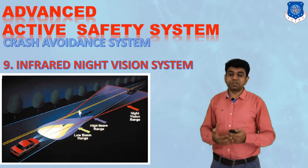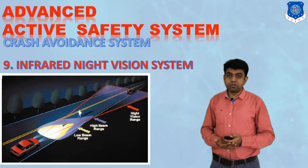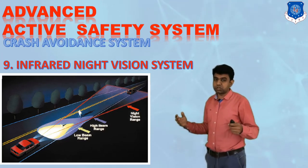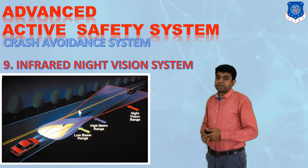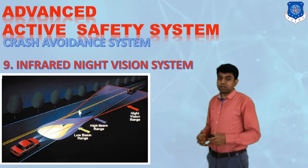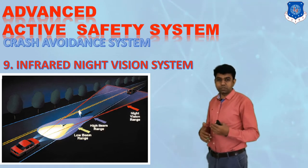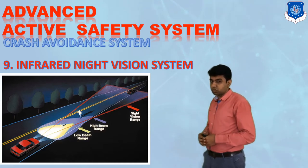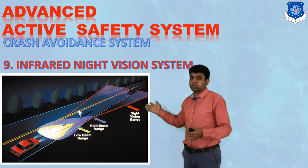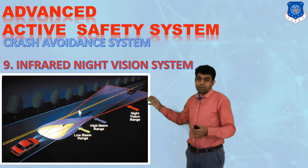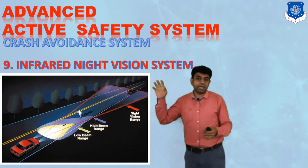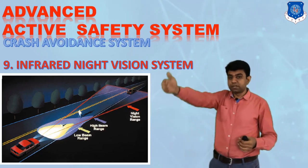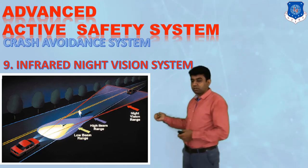The ninth system is the infrared night vision system. This is typically required for off-road vehicles and military vehicles operating in dark night conditions or different terrains. It widens the driver's vision. Infrared cameras have the tendency to detect objects at very far distances, and such applications are used in these vehicles.